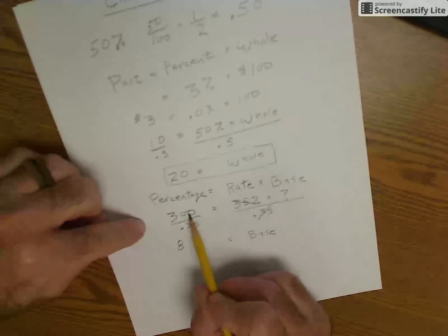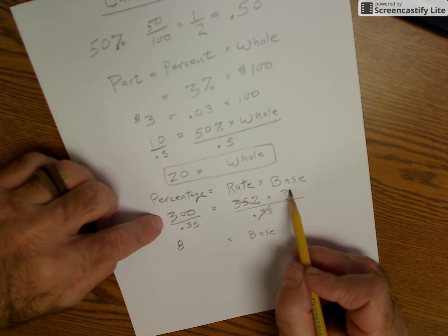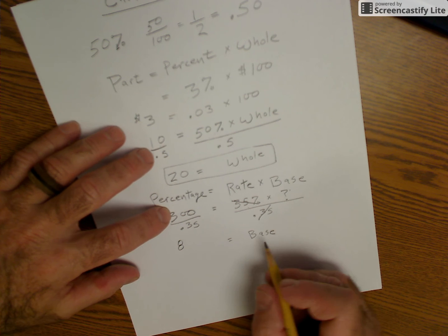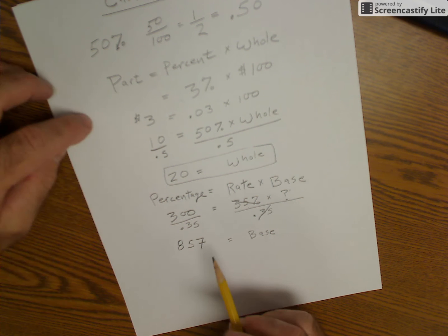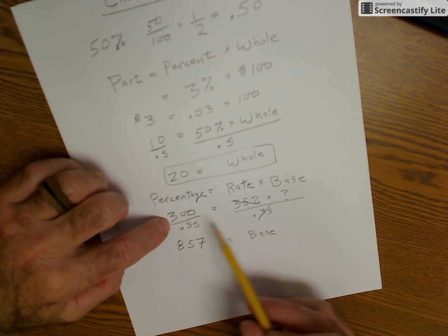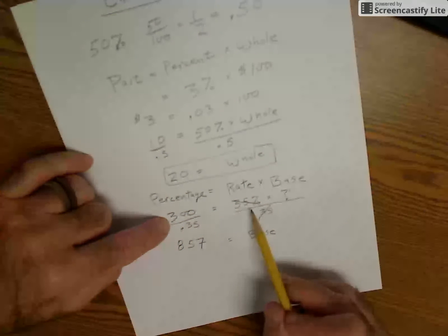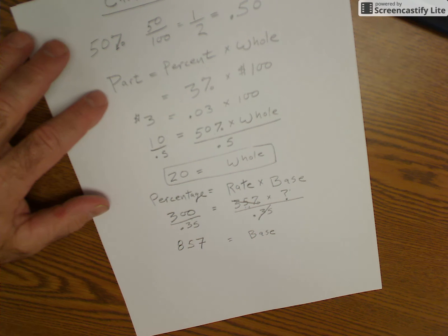Percentage is 300. The rate is 35. What is the base? That's correct. So I'm going to divide this so the base is 857. Yeah. So if what you're getting is 300 at a 35% raise, I started with 857. So 857 times 35% is 300. So I have to have any of the two to find the third.